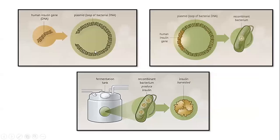You can see the procedure in sequential order here: DNA is inserted into the plasmid, the recombinant DNA is inserted into the suitable host E. coli, it is allowed to multiply, and then insulin is isolated.